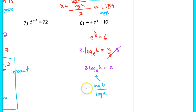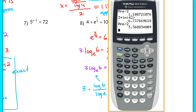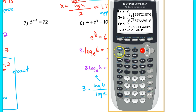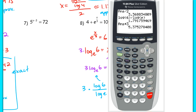To evaluate in the calculator using change of base: that's 3 times log of 6 divided by log of e. Compute log 6 divided by log e, then multiply by 3. The result is approximately 5.375.